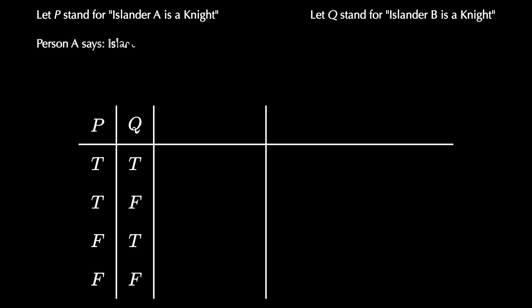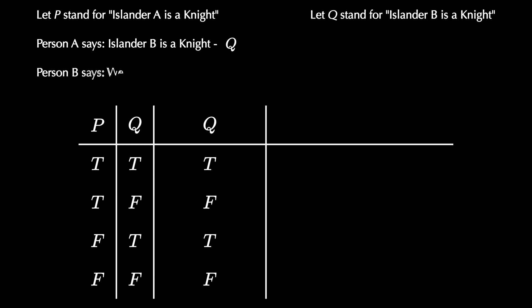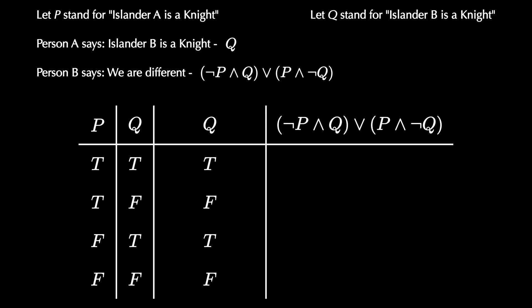Person A says islander B is a knight — this is just repeating Q, so we replace it with Q's truth column. Person B says something more complicated: they say they are different, which can be interpreted as NOT P AND Q OR P AND NOT Q. This is because NOT P means A is a knave and Q means B is a knight, or P means A is a knight and NOT Q means B is a knave. Going through the four rows, the truth table for Person B's statement is FALSE, TRUE, TRUE, FALSE.